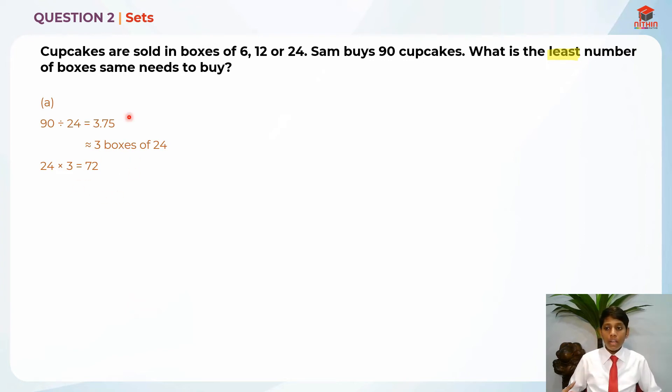Now we can find out how much this 0.75 is worth in cupcakes. We take 90 minus 72 which gives us 18 cupcakes. At this point, we need to take these 18 cupcakes and distribute them between 6 or 12 boxes.